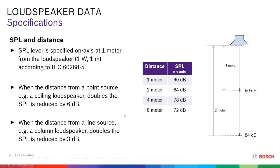One thing also to keep in mind: from a line source, like a column loudspeaker or a line array, doubling the distance means a reduction of only 3 dB. So that's different from a single point source — for columns and line arrays the reduction for doubling the distance will be 3 dB.